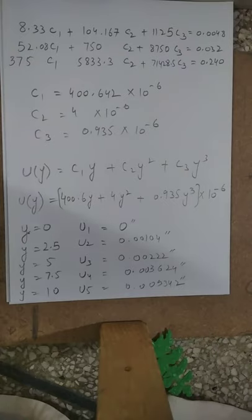Comparing with the direct (matrix) method results from example 1.1: u₁ = 0 in both methods, u₂ ≈ 0.00104 vs 0.001026, u₃ ≈ 0.0022 in both, u₄ ≈ 0.0036 in both, and u₅ = 0.0053 in both. Up to four decimal places the results are equal, confirming the weighted residual method gives accurate results consistent with the direct method.